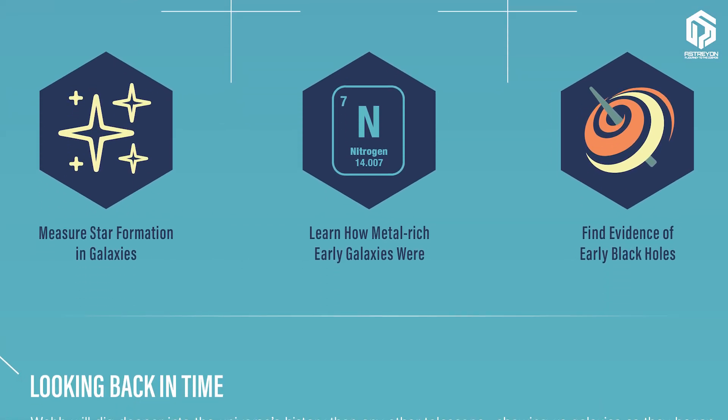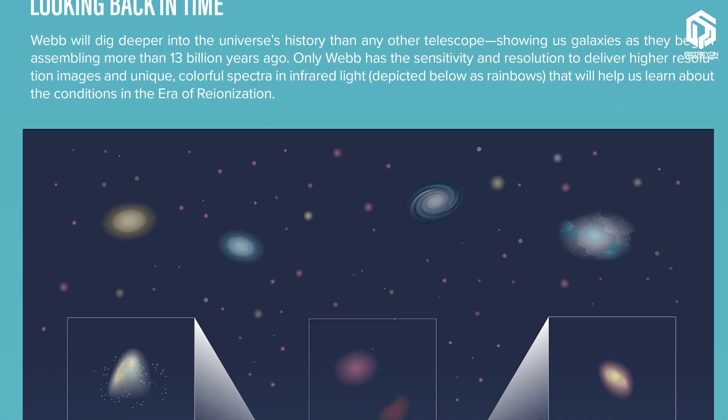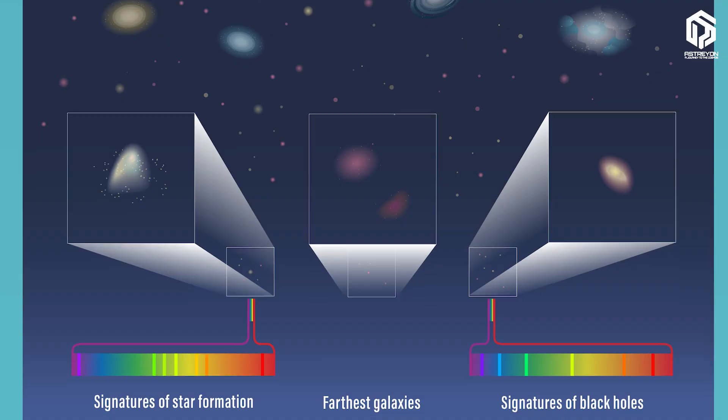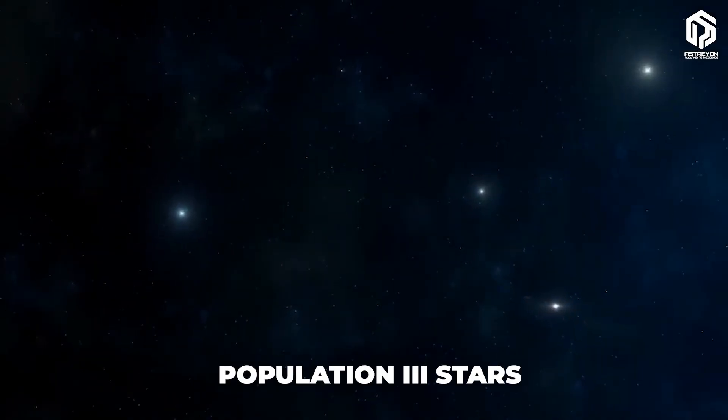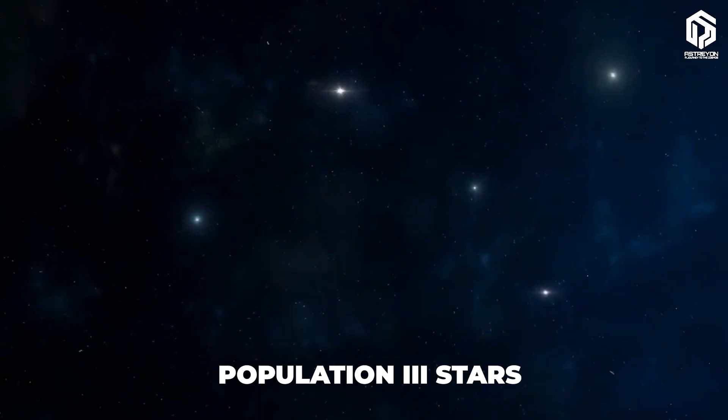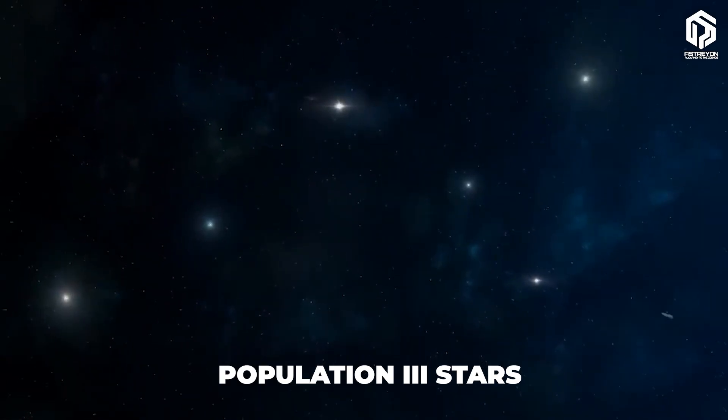This discovery shows reionization started earlier than we thought, perhaps by first-generation stars, Population 3, that were 100 times the sun's mass, with short lives but intense radiation.